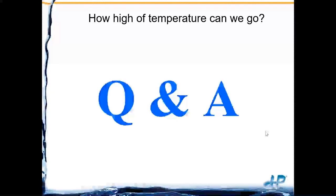Question: how high a temperature can we go? That depends on the sensor manufacturer. Some sensors can only measure up to 105°C (221°F), while others can go up to 130°C. It depends on the equipment you have.